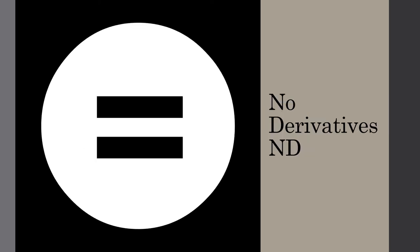The final element, and perhaps the most restrictive one, is no derivatives, or ND. This element means that while you can copy, perform, or distribute the work as it currently exists, you cannot adapt, remix, or transform it in any way. Be sure to use items that are marked ND with caution and only in their original forms.